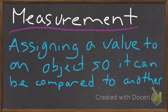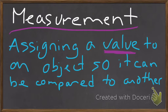So, measurement. Measurement is assigning a value to an object so it can be compared to another. The important point is the fact that we're assigning a value. We can compare things in life every day — we can say something is bigger, smaller, larger, wider, shorter, taller — but until you actually put a value to that object, you can't really be sure. And we always want to be sure about things.